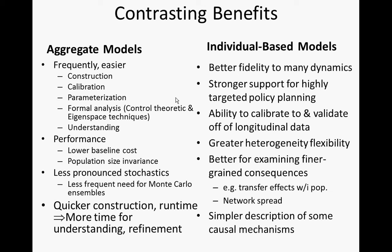Individual-based models open up a wide variety of additional data for calibration because you can make use of longitudinal data. You can match individual trajectories as well as cross-sectional depictions of population counts over time. Cross-sectional data depicts the breakdown of the population at different points in time — the count of people in what state — but doesn't link whether a person in state X at time A is the same person in state Y at time B. Longitudinal data follows individuals over time.